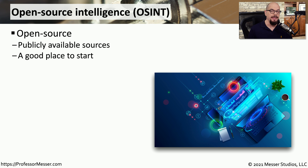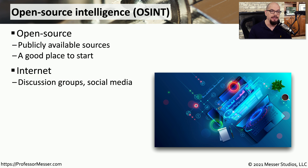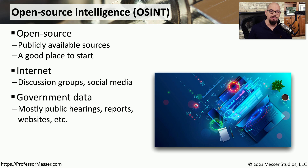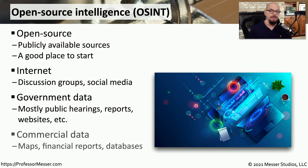A good place to start with gathering this intelligence is from open sources. This is OSINT, or open source intelligence. This may be directly from the internet in discussion groups or social media sites, or it may come from a governmental organization where they've compiled information from meetings or reports and are making that available publicly to everyone. There's also intelligence that you can gather from commercial resources — financial information, databases, maps, and other publicly available information.